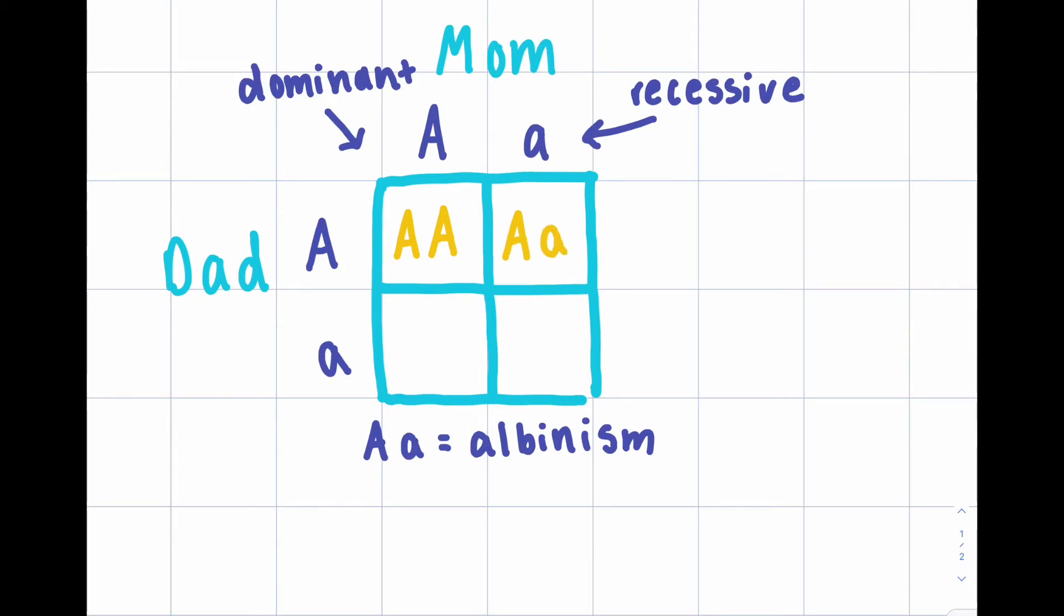Baby turtle number two has an uppercase A and a lowercase a. That means they have the dominant allele, which would give them their normal pigmentation. They do, however, have a lowercase a. So, if they were to ever have baby turtles one day, they could possibly be albino as well.